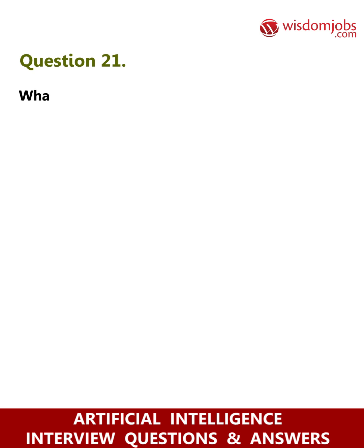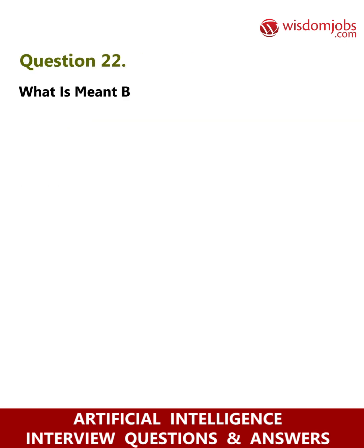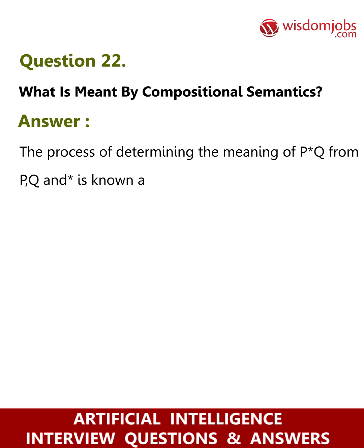Question 21: What does a production rule consist of? Answer: The production rule comprises of a set of rules and a sequence of steps. Question 22: What is meant by compositional semantics? Answer: The process of determining the meaning of P * Q from P, Q, and * is known as compositional semantics.